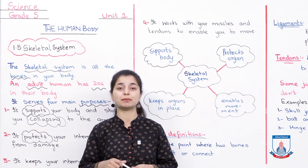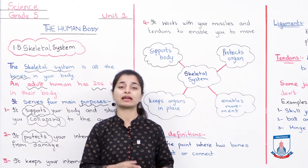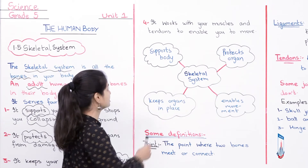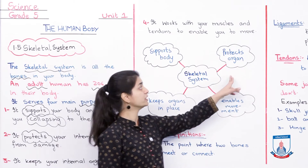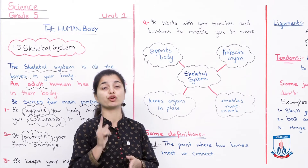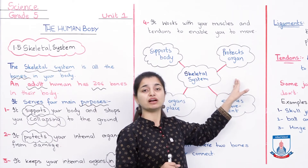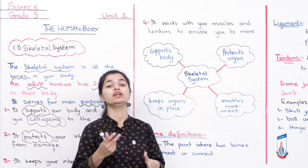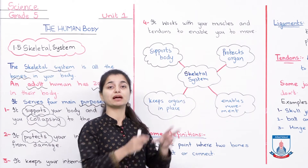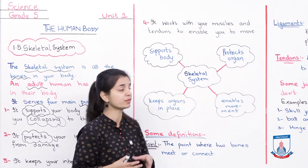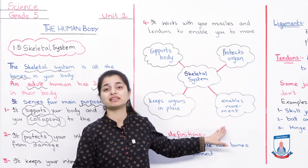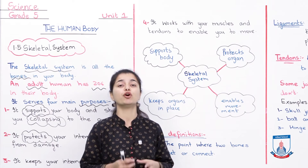To summarize, I've made a web diagram here with the four purposes again. First, supports the body. Second, protects internal organs. Third, keeps organs in place — not just protecting them but holding them in position. Fourth, enables movement. So those are the four purposes of your skeletal system.